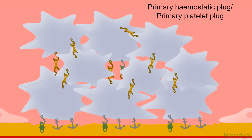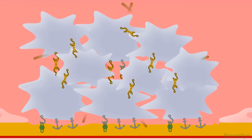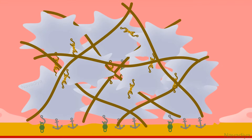The plug thus formed is called the primary hemostatic plug or primary platelet plug. It quickly seals the break in the vasculature but is comparatively weak. Fibrin synthesized at the end of the coagulation cascade strengthens this plug, and it is then called the secondary plug.